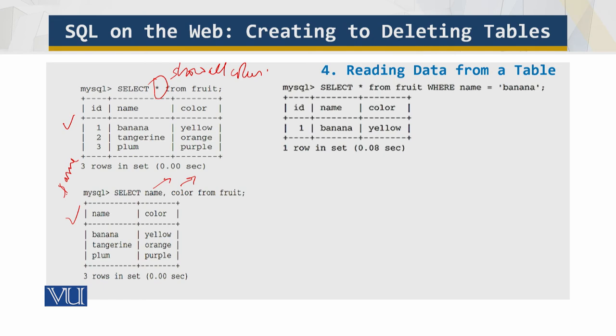Then I put a condition which is a WHERE clause to retrieve data which is specific. For example, I am only interested in everything, asterisk means everything, all, from this fruit table. What is the selection criteria? WHERE the name is banana. So I get the name attribute and the color attribute only for banana. Over here it was for tangerine and plum also. This was without the WHERE clause.